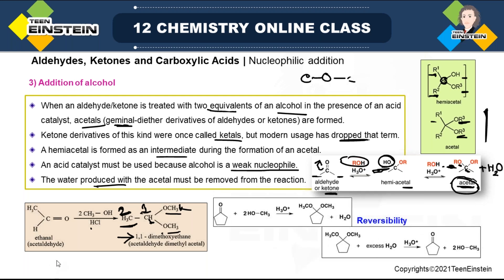This reaction has a reversible nature, shown by the equilibrium sign. Suppose if you start with cyclopentanone treated with two methanol molecules in presence of acid catalyst, first there will be formation of the geminal diether acetal. But if water is not removed and is still present in excess, the reverse reaction will take place, giving back the original starting material — the ketone and two molecules of methanol. That is why you should remove water as soon as it is formed as byproduct.